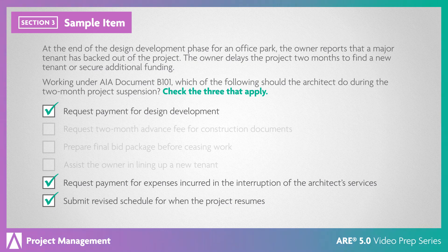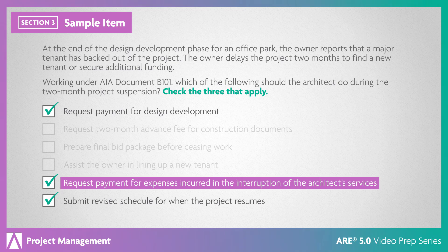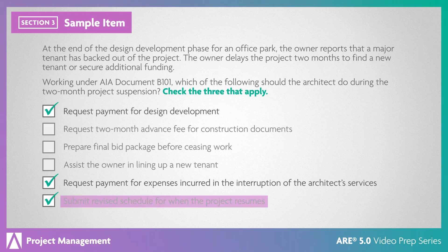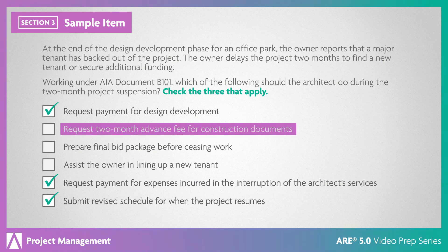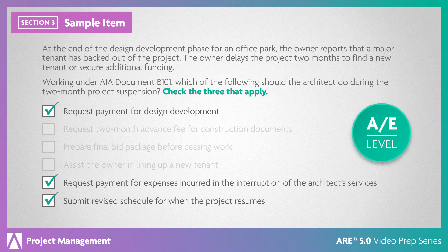According to AIA Document B-101, if the owner suspends a project, the architect is entitled to payment for all expenses incurred up to that point. The architect can also request payment for expenses incurred because of the interruption. And if the project resumes, a revised schedule can be submitted. When an owner suspends a project, the architect should suspend work on the project, so requesting an advance or completing other work is unwise. While assisting the owner in lining up a tenant may get the project back on track, it is beyond the scope of a standard owner-architect relationship and is not the role of the architect. This is an AE-level item because it expects you to understand this contract and how the delay results in both a suspension of work and consequences for both parties.